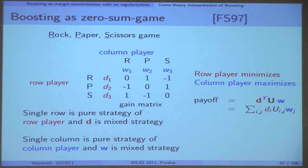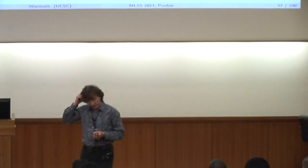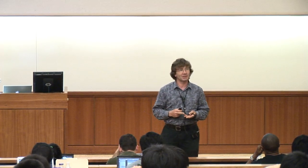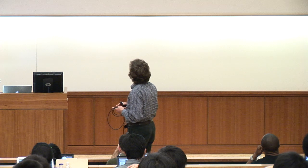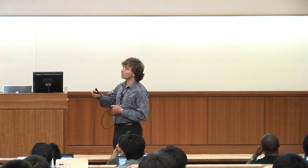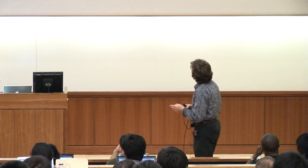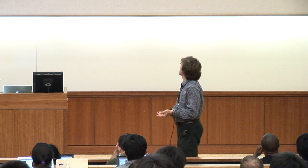Rock, paper, scissors has all kinds of implementations in biology. When you have speciation going on, very often there are three different morphs. A colleague of mine, Barry Sinervo, studied side-blotched lizards — three morphs: orange, blue, and green. The orange type is the macho type, beats up blue but doesn't recognize green. Green disguises as a female. Blue gets beaten by orange but recognizes green. Green gets beaten by blue but sneaks into orange's territory. So there's a rock, paper, scissors going on.